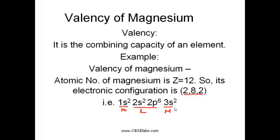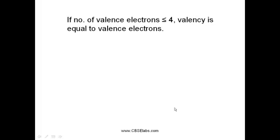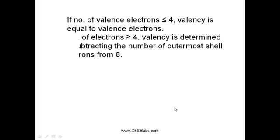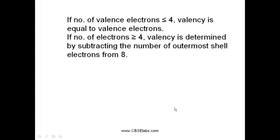To find out the valency of magnesium, we have two cases. First, if the number of valence electrons are less than 4, the valency is equal to the number of valence electrons. Whereas if the number of electrons are greater than 4, then valency is determined by subtracting the number of outermost electrons from 8.